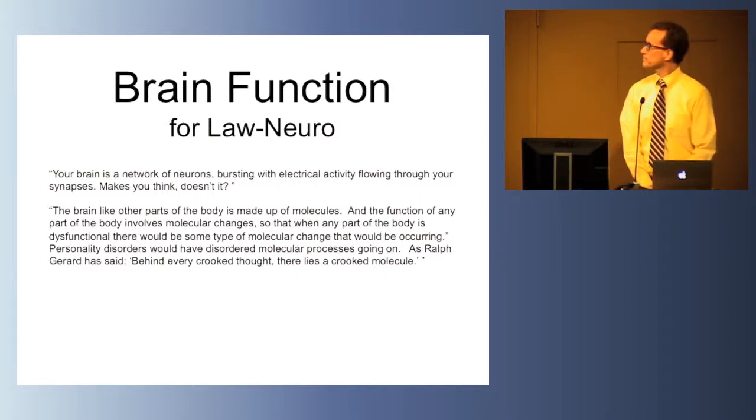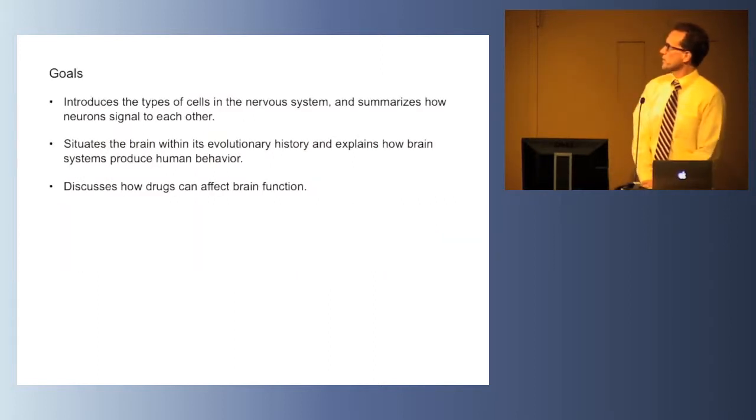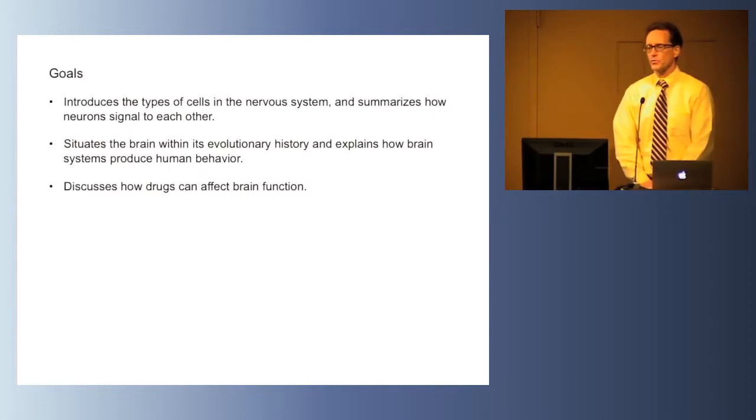This lecture is about brain function and has three goals: to introduce the types of cells in the nervous system and summarize how they signal to each other, to situate the brain within its evolutionary history to explain how brain systems produce behavior, and finally to discuss how drugs can affect brain function.